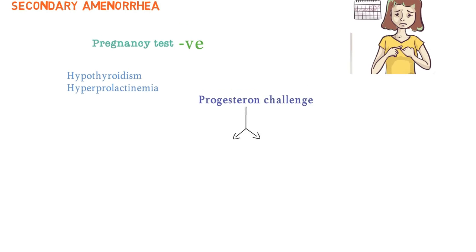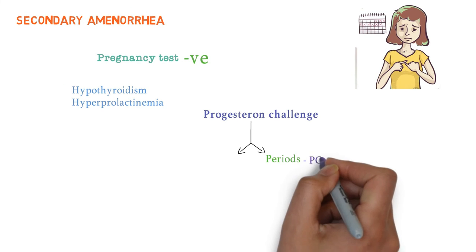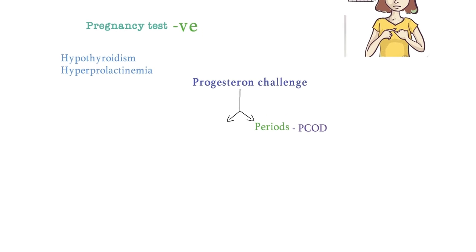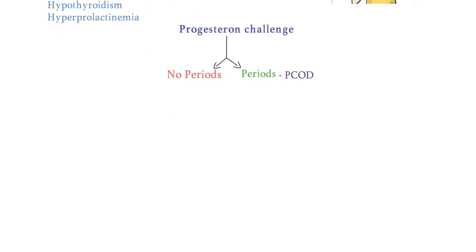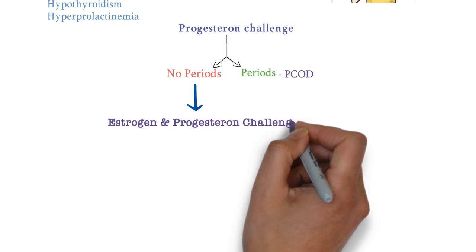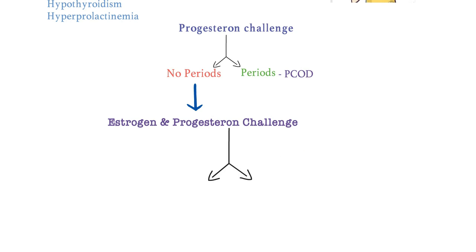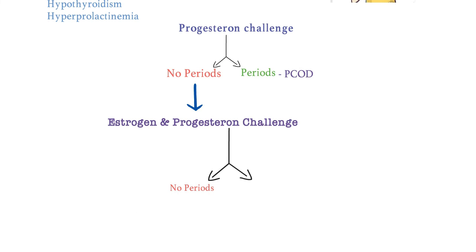We do a progesterone challenge test — give progesterone for five to six days. If she gets periods after this, it may be PCOD, that is polycystic ovarian disease. If the progesterone challenge test shows no periods, we do an estrogen and progesterone challenge test. If there are still no periods after estrogen and progesterone, it can be Asherman syndrome, which is uterine synechiae or intrauterine adhesions.